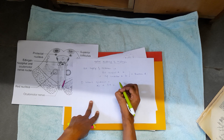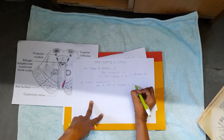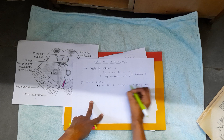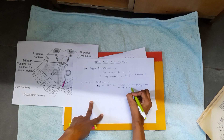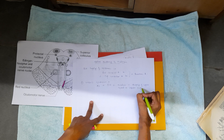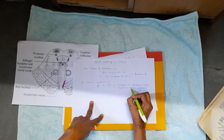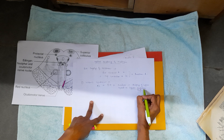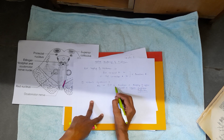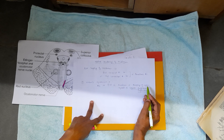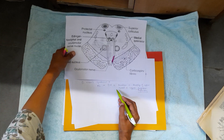Third nerve paralysis leads to drooping of the upper eyelid, because the third nerve supplies the levator palpebrae superioris muscle. 'Levator' means to elevate, 'palpebrae' means eyelid fissure, and 'superioris' means upper. This muscle elevates the upper eyelid and is supplied by the third nerve. If third nerve paralysis occurs, it leads to same-side drooping of the upper eyelid — this is feature number one.